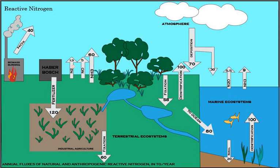Nitrification: The conversion of ammonium to nitrate is performed primarily by soil-living bacteria and other nitrifying bacteria. In the primary stage of nitrification, the oxidation of ammonium (NH4+) is performed by bacteria such as the Nitrosomonas species, which converts ammonia to nitrites (NO2-). Other bacterial species such as Nitrobacter are responsible for the oxidation of nitrites into nitrates (NO3-). It is important for the ammonia to be converted to nitrates or nitrites because ammonia gas is toxic to plants. Due to their very high solubility and because soils are highly unable to retain anions, nitrates can enter groundwater. Elevated nitrate in groundwater is a concern for drinking water use because nitrate can interfere with blood oxygen levels in infants and cause methemoglobinemia or blue baby syndrome.